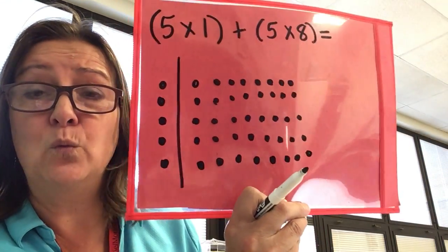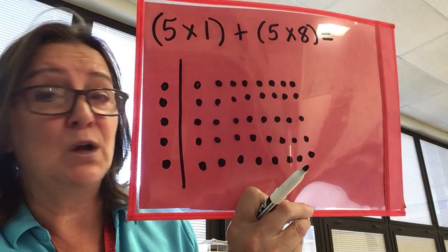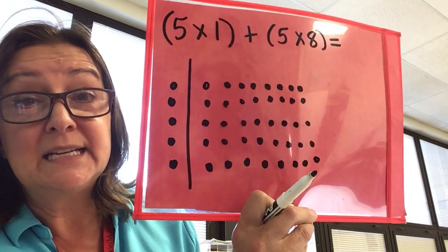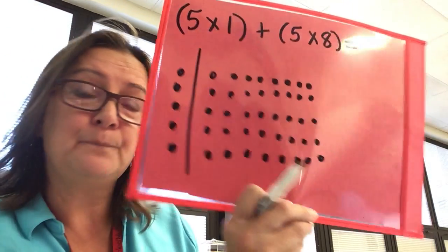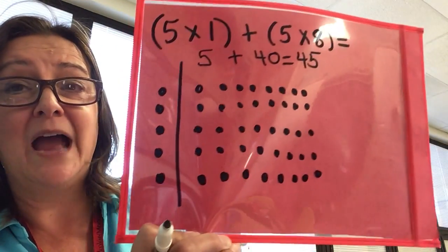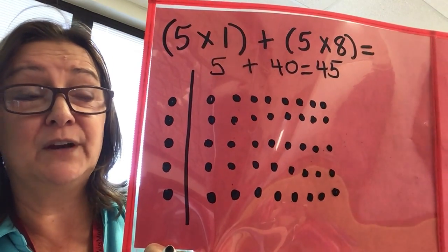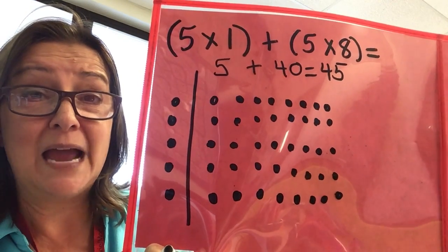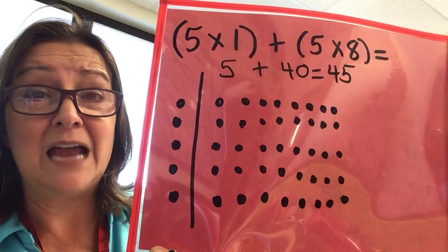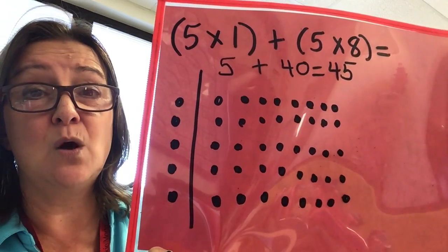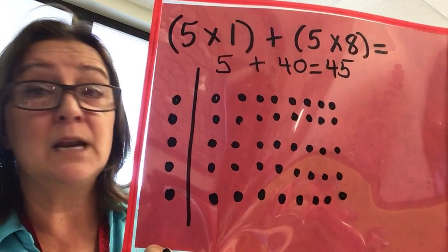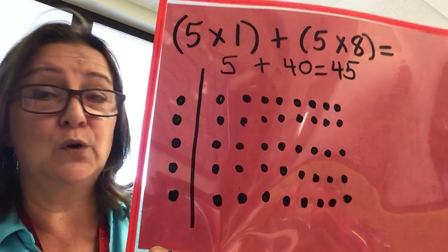So I've drawn an array to match the multiplication expression. Now if you'd like to take it a step further, which I hope you do, you can solve. First I'm going to solve for my multiplication problem on the top. I know that five times one is five plus five times eight. Lots of ways you can figure that out. You can count each dot, you can skip count, if you know your fives you can just put down the answer that you know, or you can use your multiplication chart. Then I'm going to add those together. Five plus 40 equals 45.